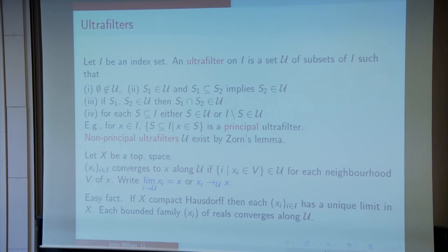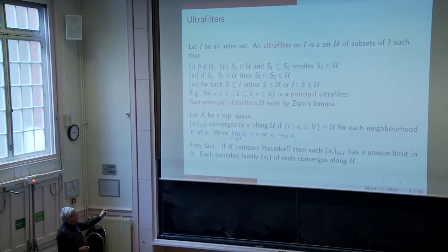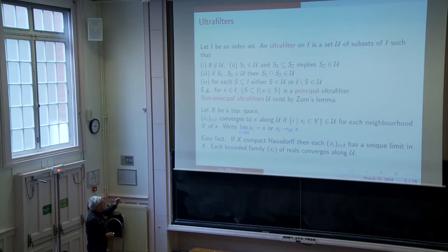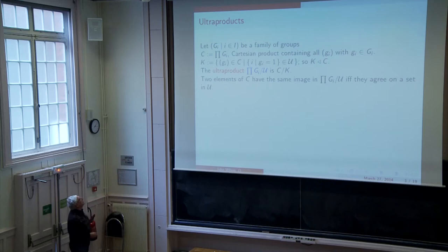We saw ultralimits, these limits in another talk yesterday. It is a crucial easy fact that if you have a compact Hausdorff topological space, then each sequence has a unique limit in X with respect to this ultrafilter. Each bounded family of reals converges along U. So you see, this is the alternative approach to doing analysis. If you don't want to talk about epsilons and deltas, there's some hope of trying to use this sort of material.